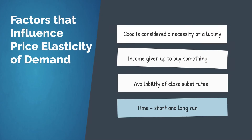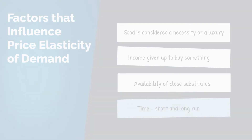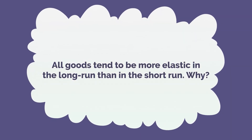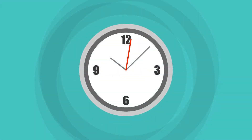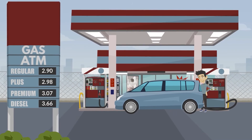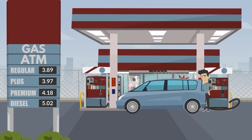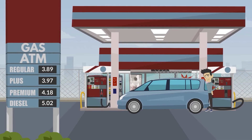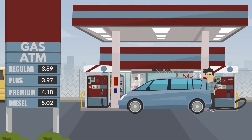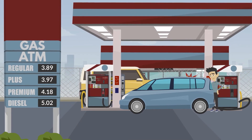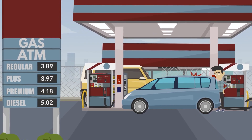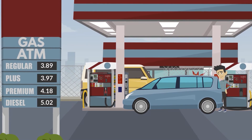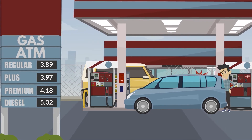A fourth factor of price elasticity is time. All goods tend to be more elastic in the long run than in the short run. Time allows people to find substitutes. So if the price of gasoline were to increase, in the short run you would likely decrease the quantity you demand, but only slightly. You would still likely have the same commute to work or school and the same car as before the price increase. Realistically, it could be hard to quickly reduce the quantity of gas you use.